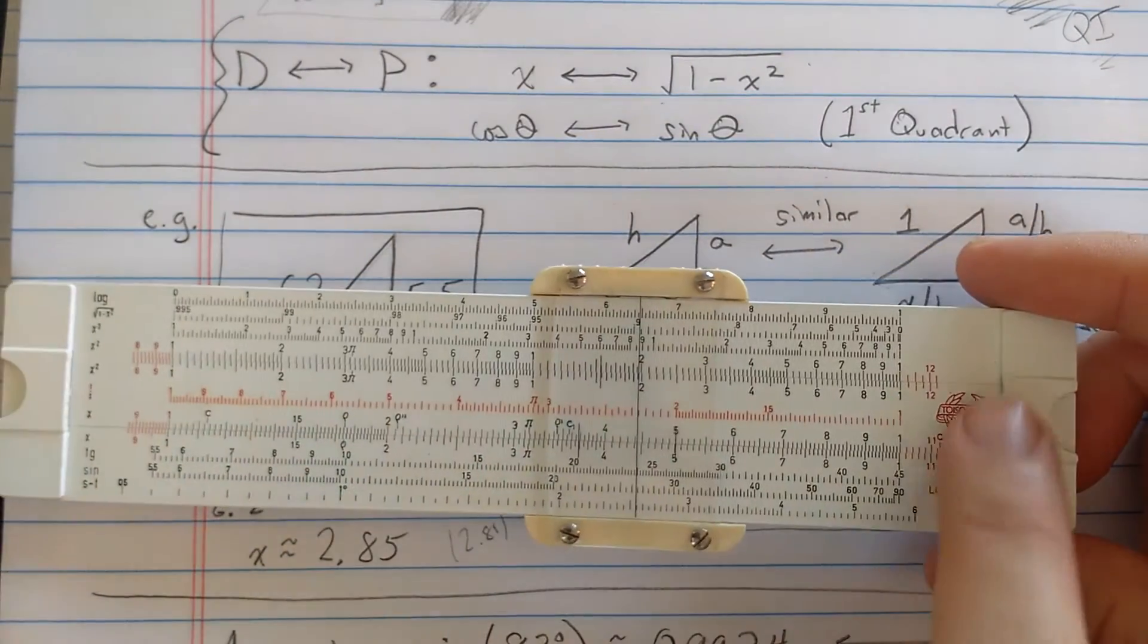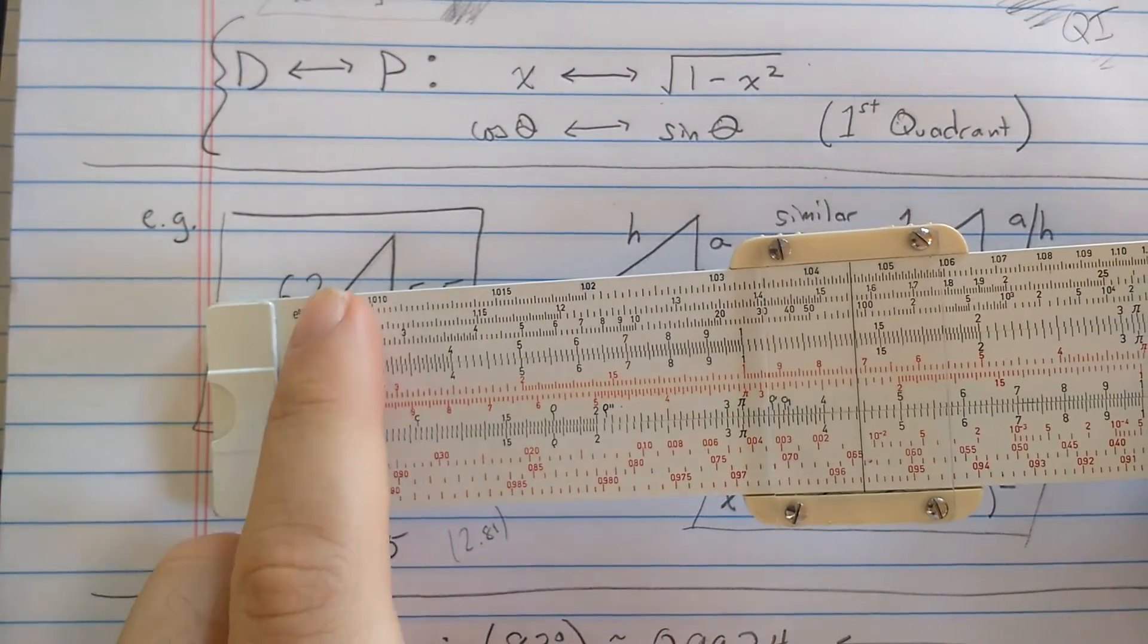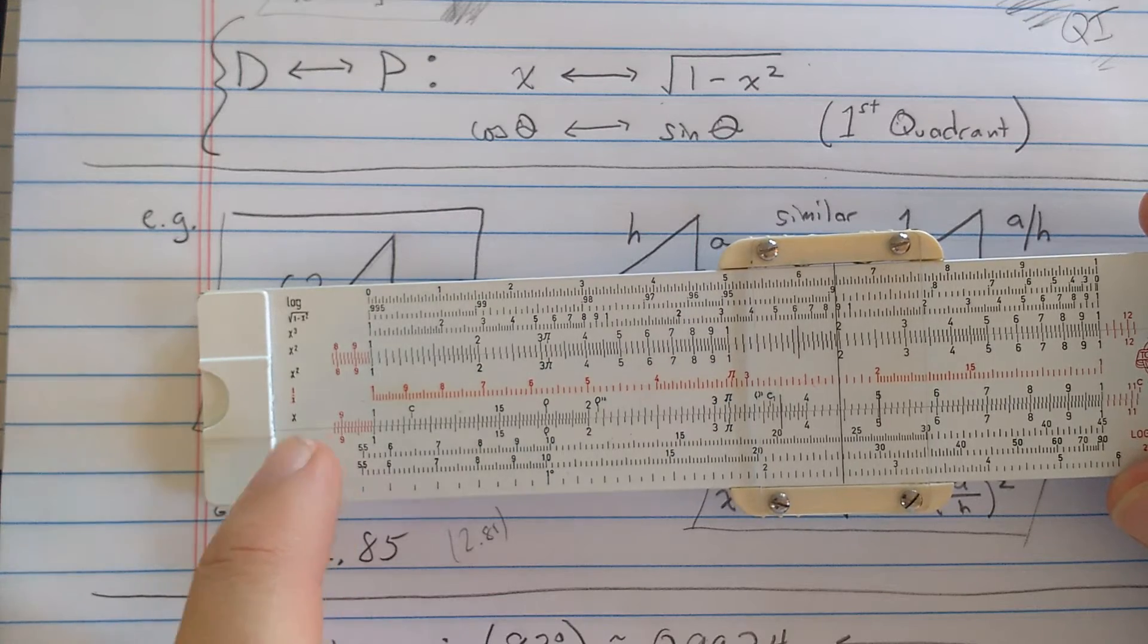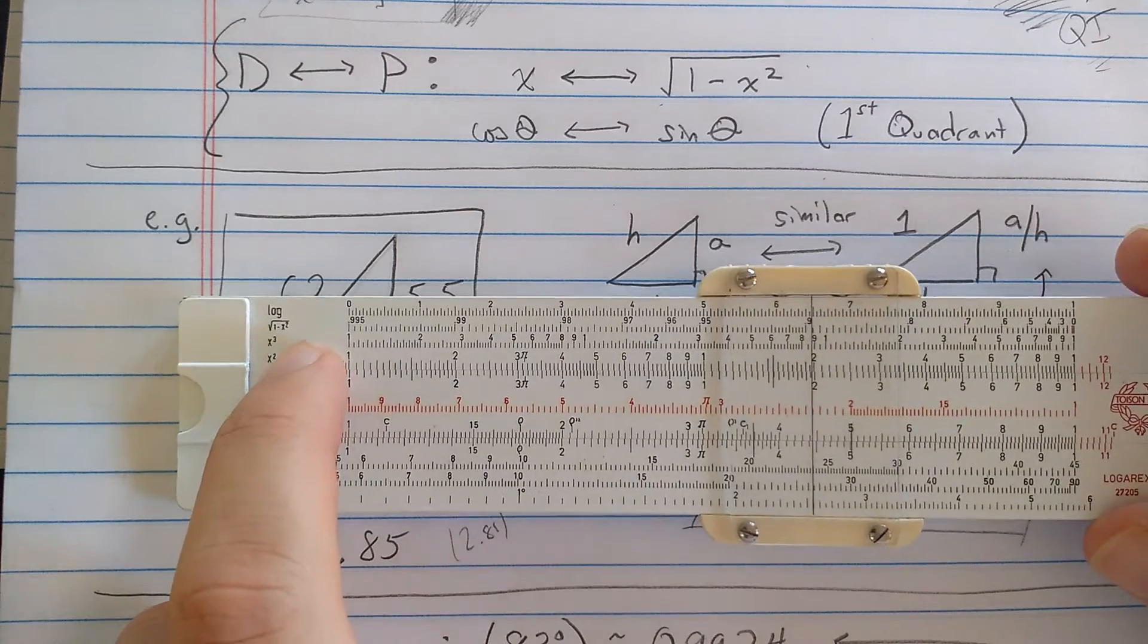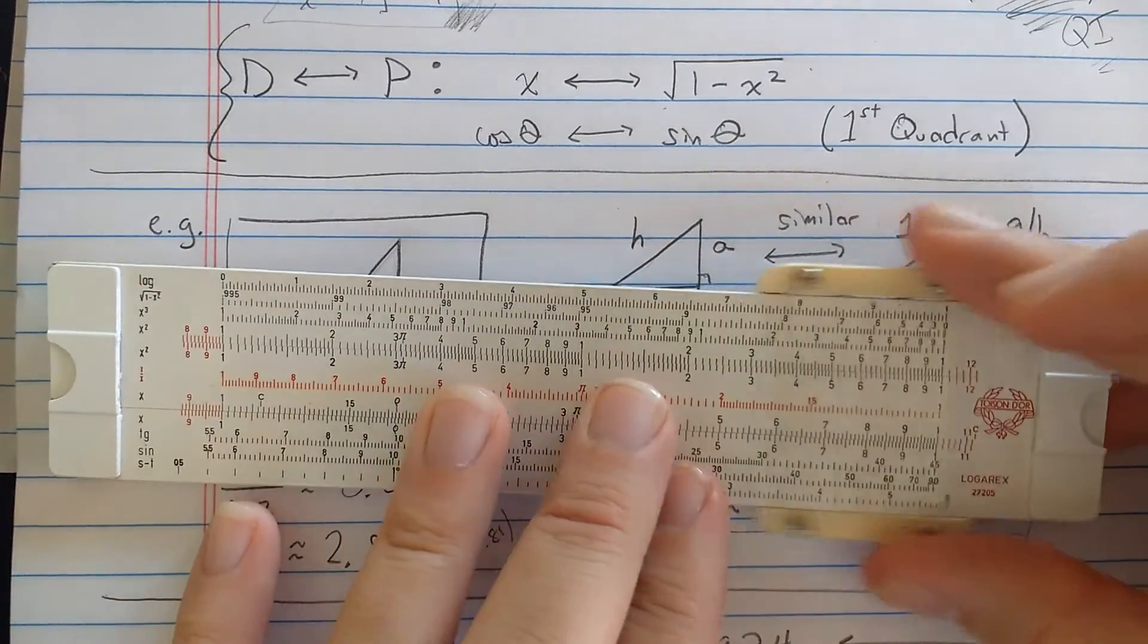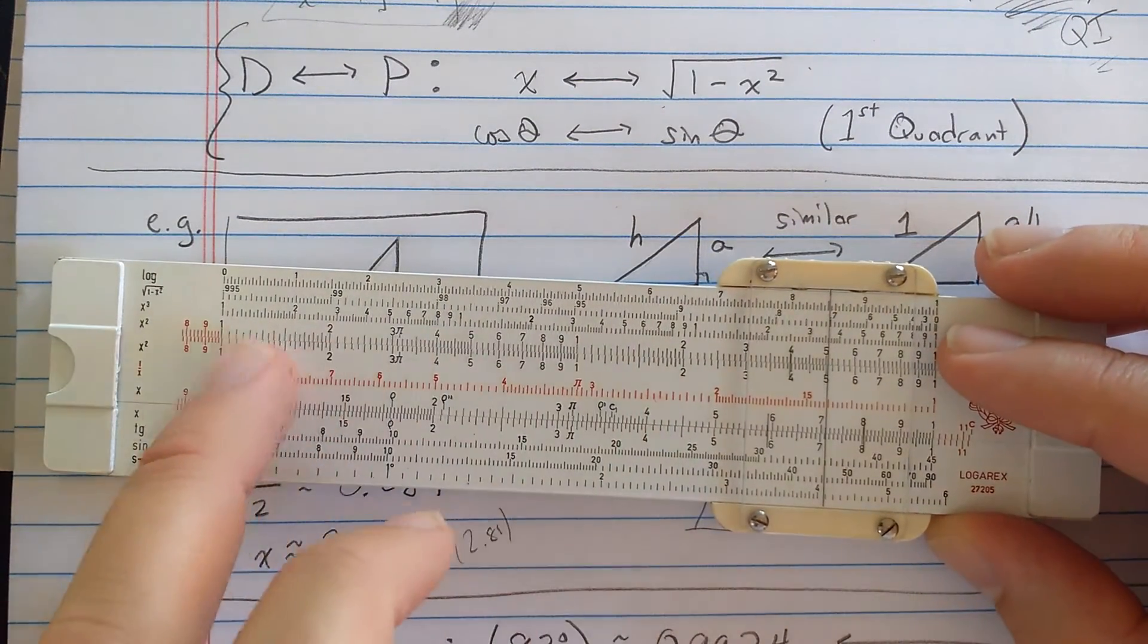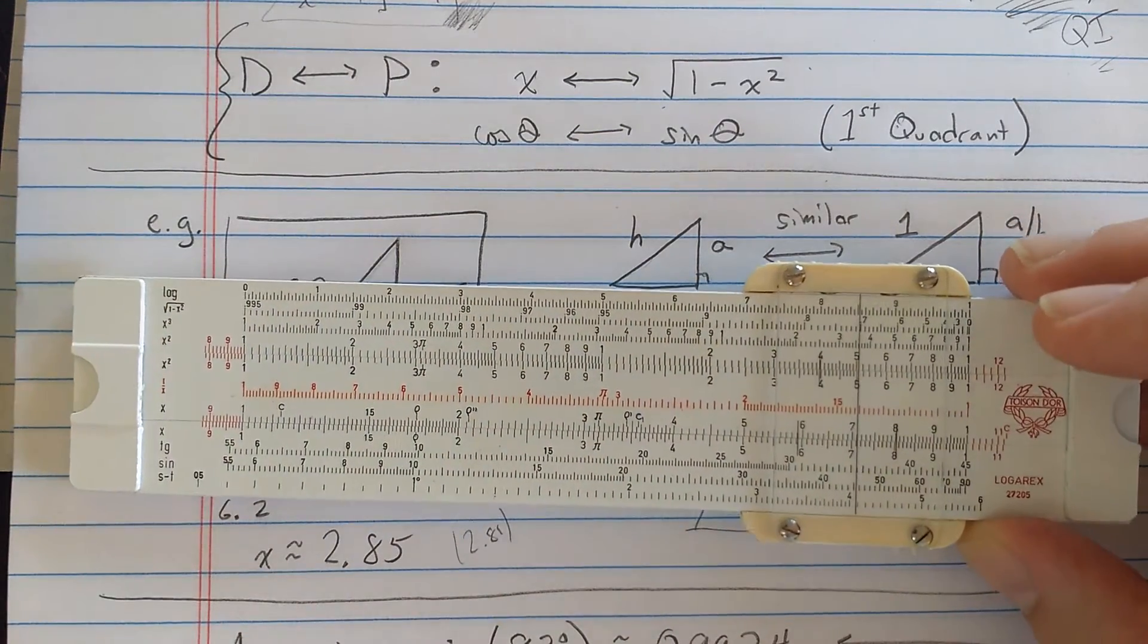This is a self-documenting slide rule, but it doesn't actually have the regular names printed anywhere. So it has only the function names with respect to the C and the D, which are labeled as x. The D scale here is labeled x. Here, the second from the top is the P scale, and it's labeled 1 minus x squared. So this P scale is across the top here. You can see on the right end it starts at 0, and on the left end, the last mark here is 0.995.